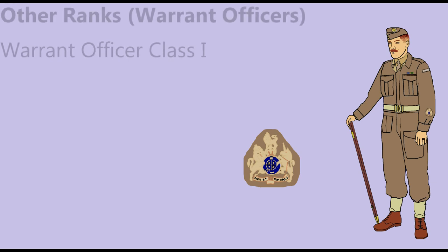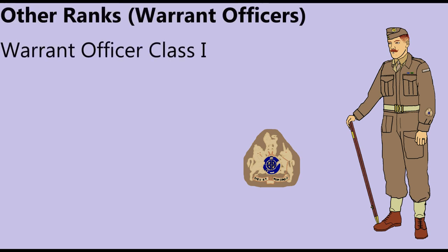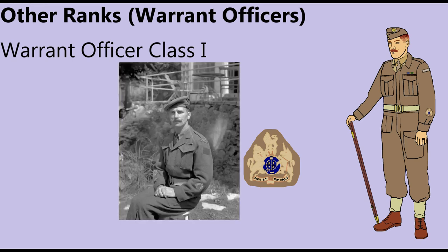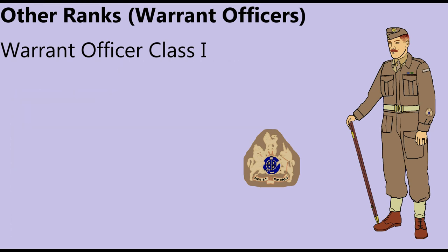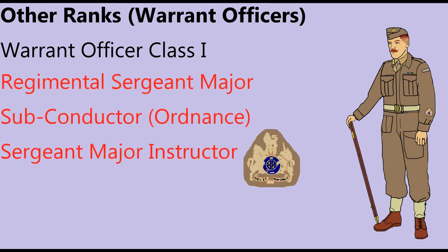The highest non-commissioned rank was Warrant Officer Class I, who wore the royal arms on his lower sleeve. He enjoyed a number of dress distinctions normally denied to other ranks, such as officer-quality cap and collar badges, a collar and tie, and in service dress, the Sam Brown belt. A number of appointments were filled by soldiers ranked WO1, including Regimental Sergeant Major, Ordnance Subconductor, and Sergeant Major Instructors of the Instructional Cadre.